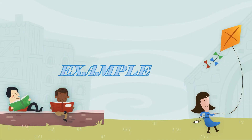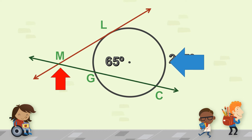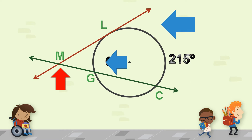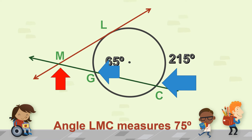Let's have an example. We would like to find out the measure of angle LMC. The measure of the bigger arc — arc LC — is 215 degrees, and arc LG is 65 degrees. Remember, this is formed by one tangent line and one secant line. To get the measure of angle LMC, we subtract the bigger arc and the smaller arc then divide by two. So 215 degrees minus 65 degrees divided by two gives us the measure of angle LMC, which is 75 degrees.